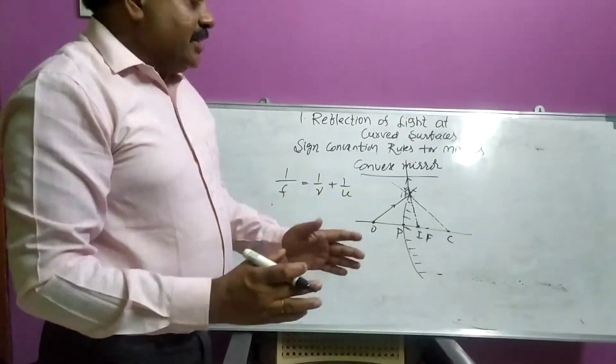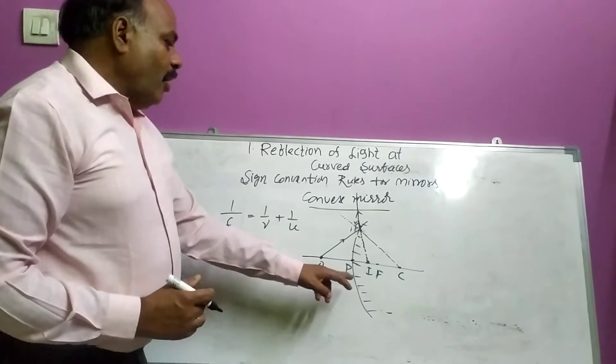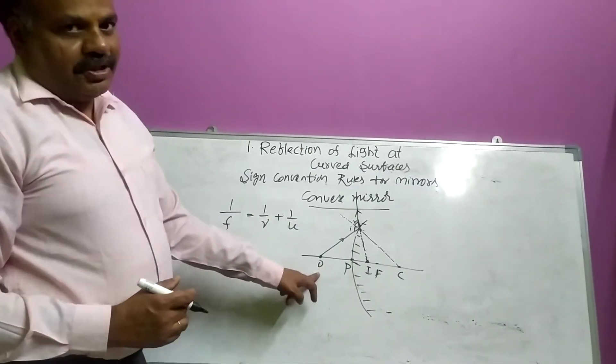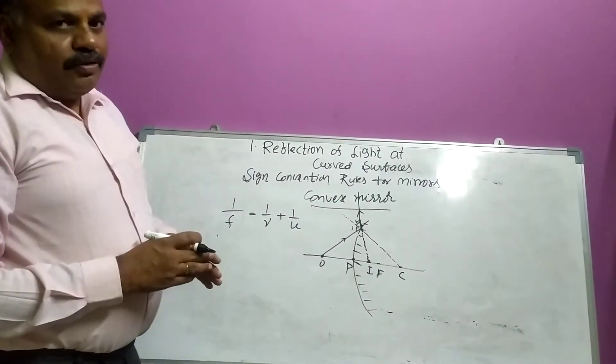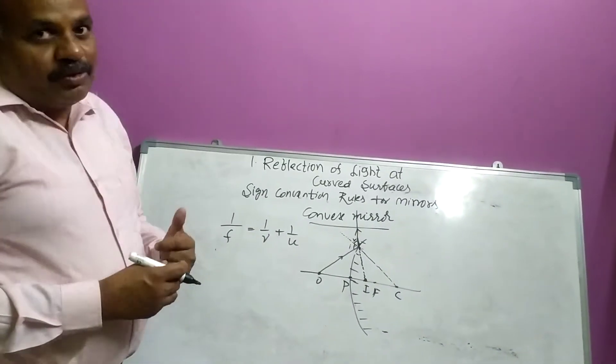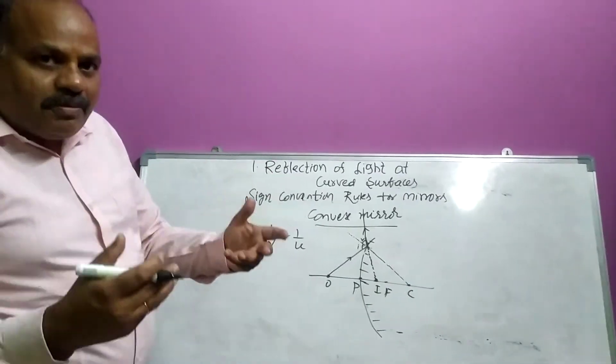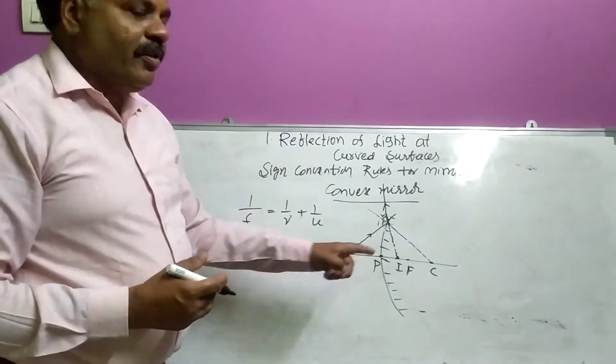Now we apply sign convention rules for this. See, first one, object, where is object, this is object. Before that, once we have to recall our sign convention rules. Every distance, all distances must be measured from pole.